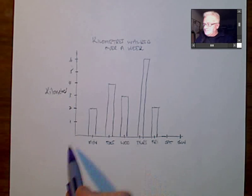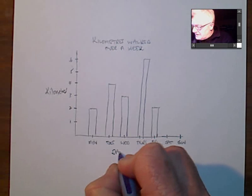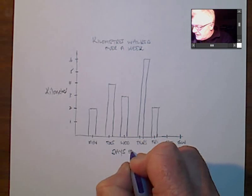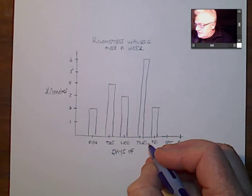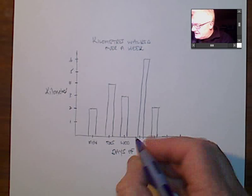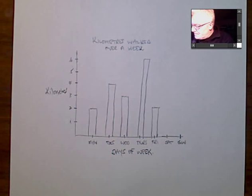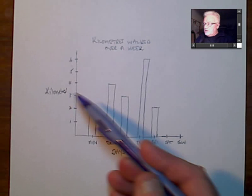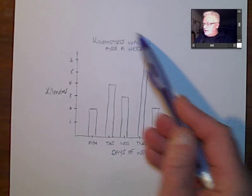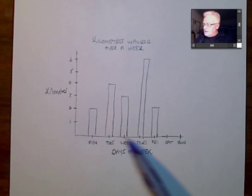Down below here, obviously these are the days of the week. Now sometimes it can be quite obvious, but I always tend to make sure that I have a title for my x-axis. So this is for days of the week. And so I can clearly see here that I have a main title, a y-axis title, and an x-axis title.